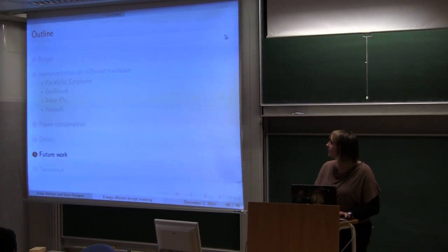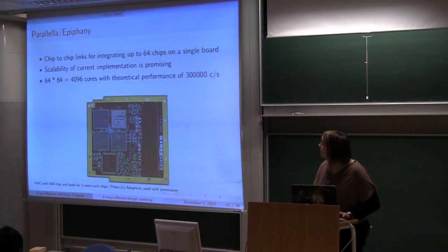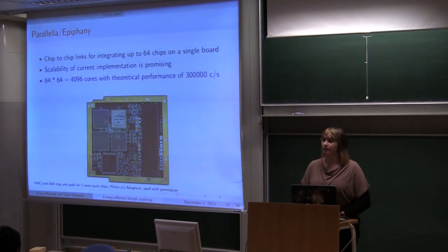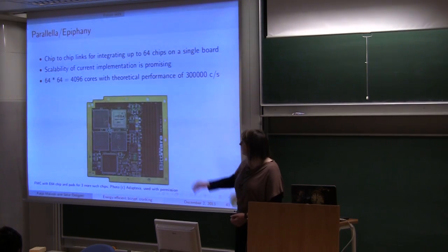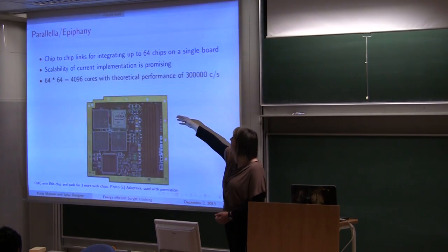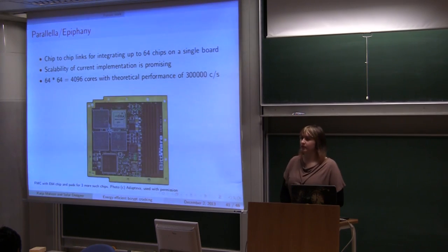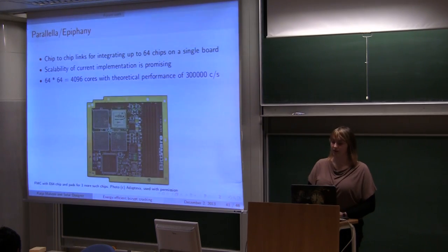So for the future work, for Parallella Epiphany, what's very good about this architecture is the fact that it has chip-to-chip links for integrating up to 64 chips on a single board. If we use that with 64 chips, with 64 cores, we get theoretical performance of 300,000 cracks per second. Which is really nice figure. But it's only theoretical interpolation. But scalability and portability of current implementation is really promising.